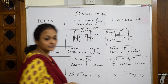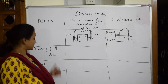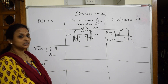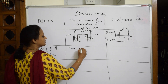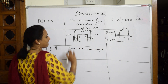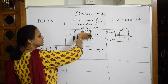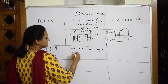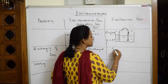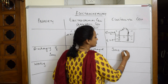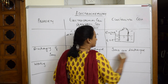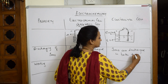The next difference is the discharging of ions. In electrochemical cells, ions are discharged only at the cathode — electrons transfer from the anode and are finally discharged at the cathode. In electrolytic cells, ions are discharged at both electrodes.